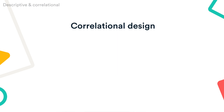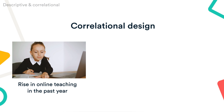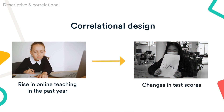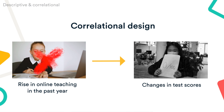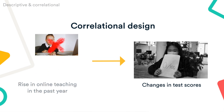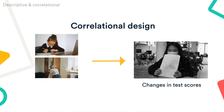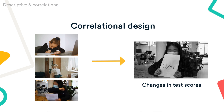For example, you could use a correlational design to find out if the rise in online teaching in the past year correlates with any change in test scores. With these designs, it's hard to draw conclusions about cause-and-effect because other factors may influence the results. For example, the change in test scores might not be caused by classes being taught online, but by other variables such as increased stress and health issues among students and teachers.